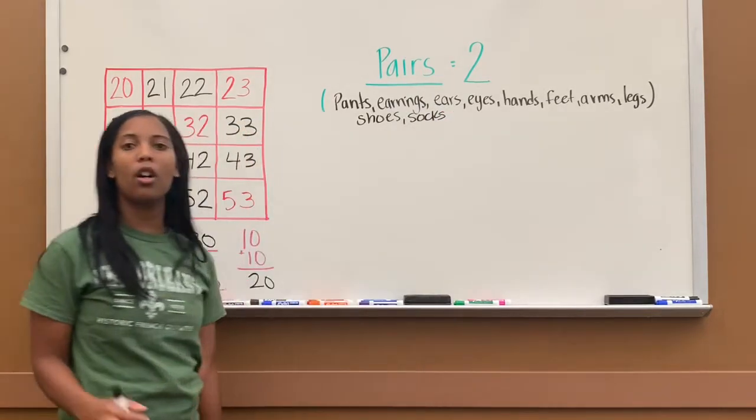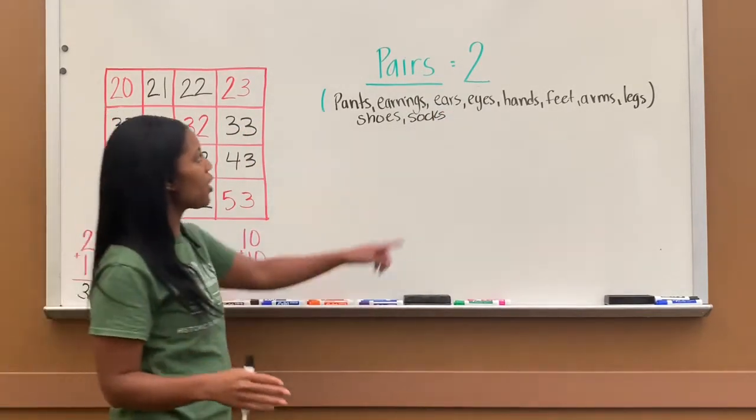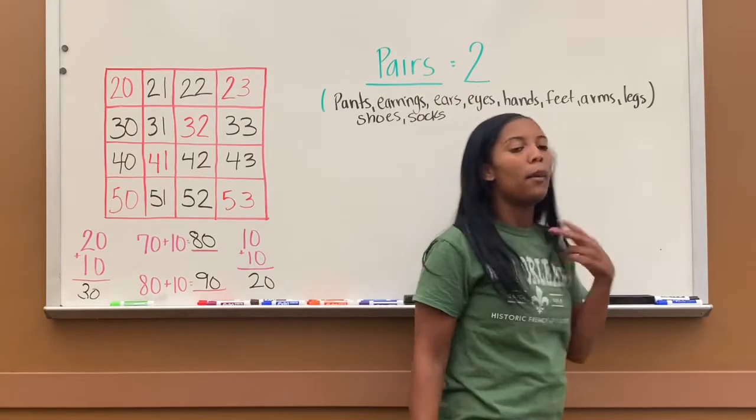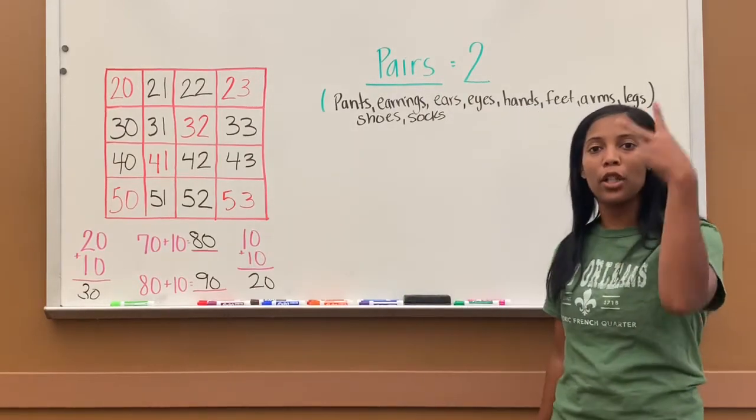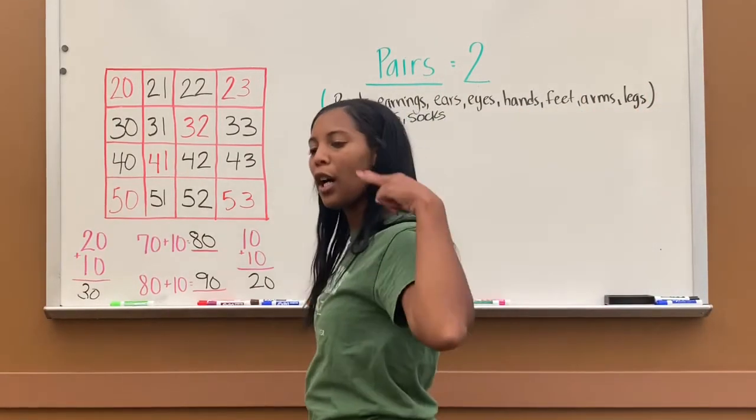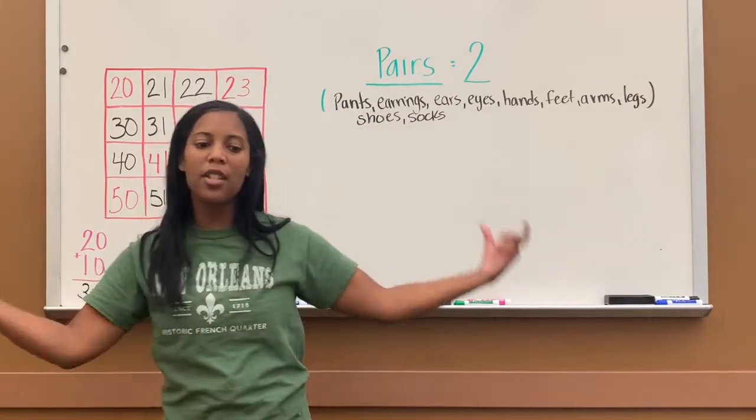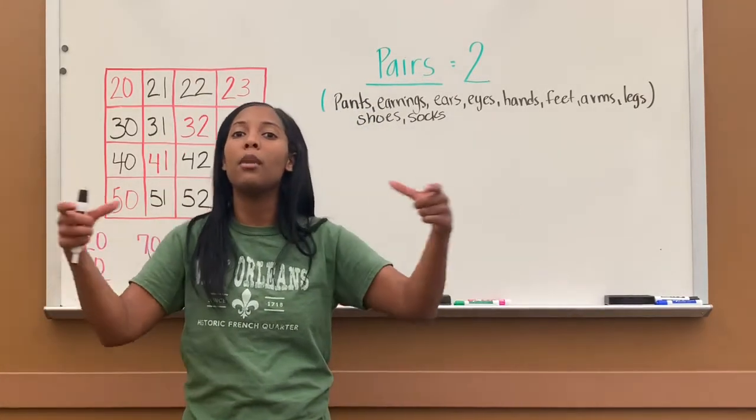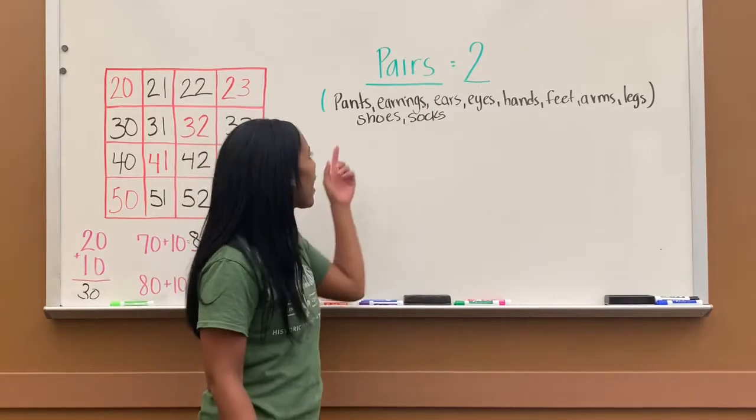So all of these are what we call pairs. As you can see, I have the number two. Pairs means the number two. It's two of them together. A pair.